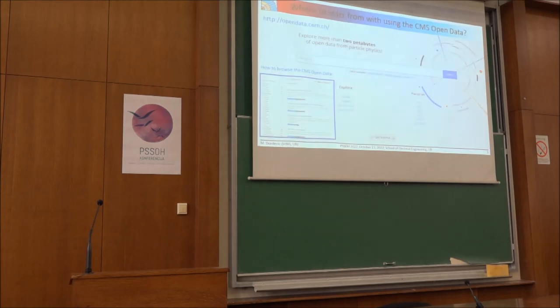Now where to start and how to find the CMS open data? There is a portal there that you can explore and there is more than two petabytes of data available to be tested and examined. Here is how this browsing window looks. You can search for either the particular datasets or some software that you would want to install, some documentation and you can focus also here on all four LHC experiments plus some additional information.